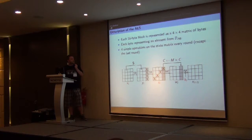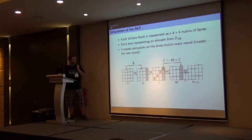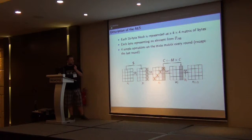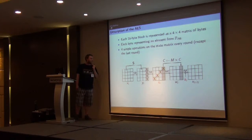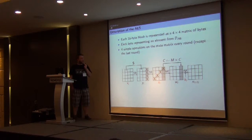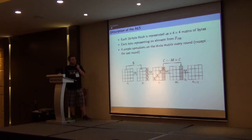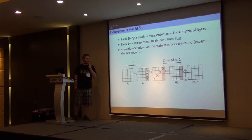One AES round is composed of four simple operations applied successively on the state matrix. The first is a SubBytes operation that applies the same nonlinear S-box on each byte of the state matrix. Then there is the ShiftRows operation that shifts the rows. Then there is the MixColumns operation that multiplies the state matrix by a constant MDS matrix. Finally, there is the AddRoundKey operation that performs the XOR between the state matrix and the subkey K.